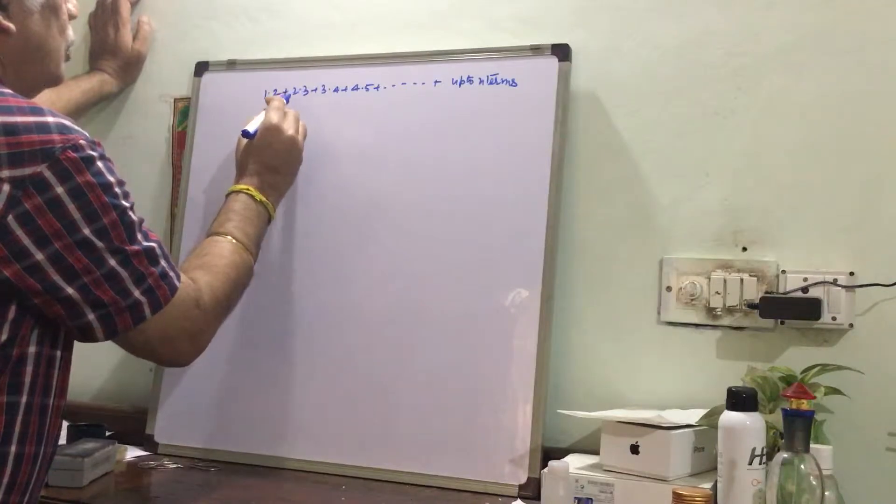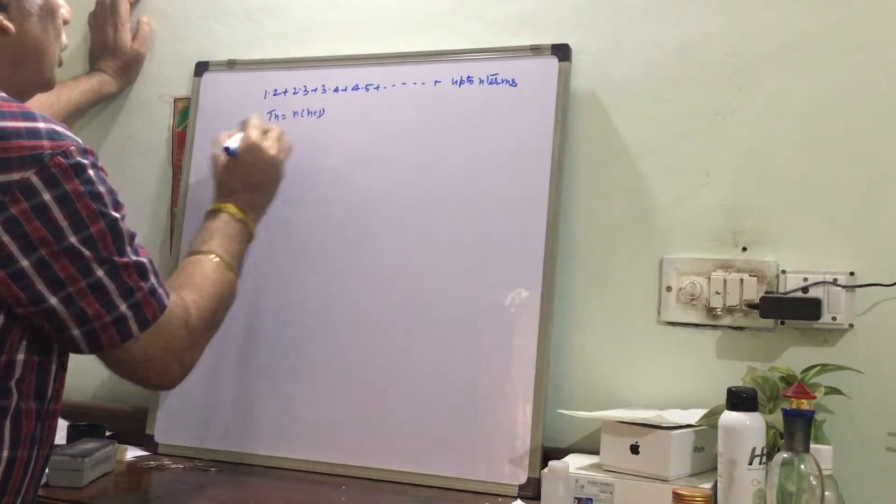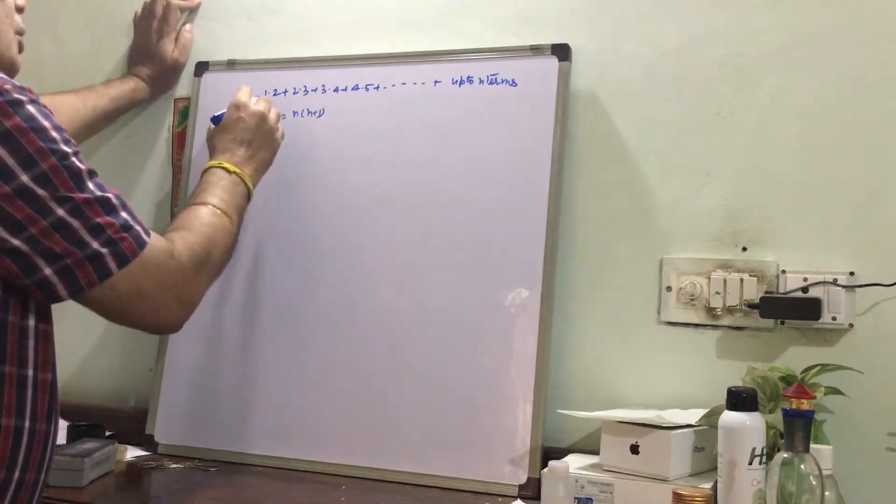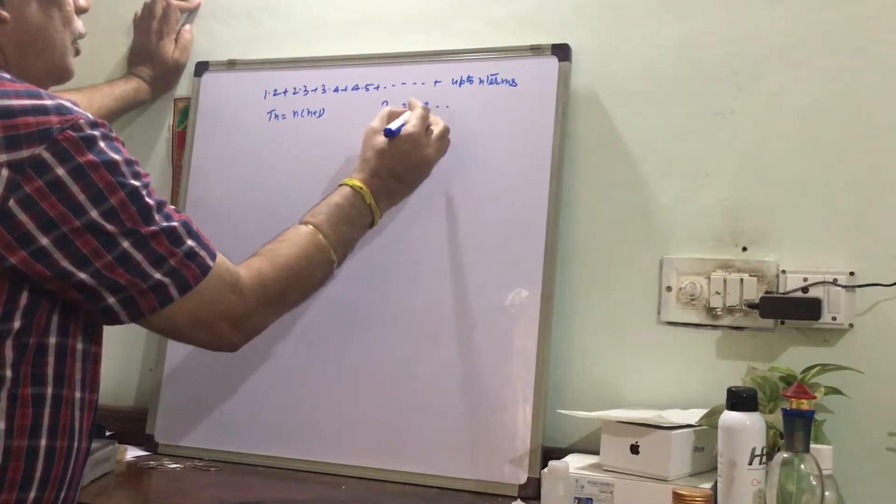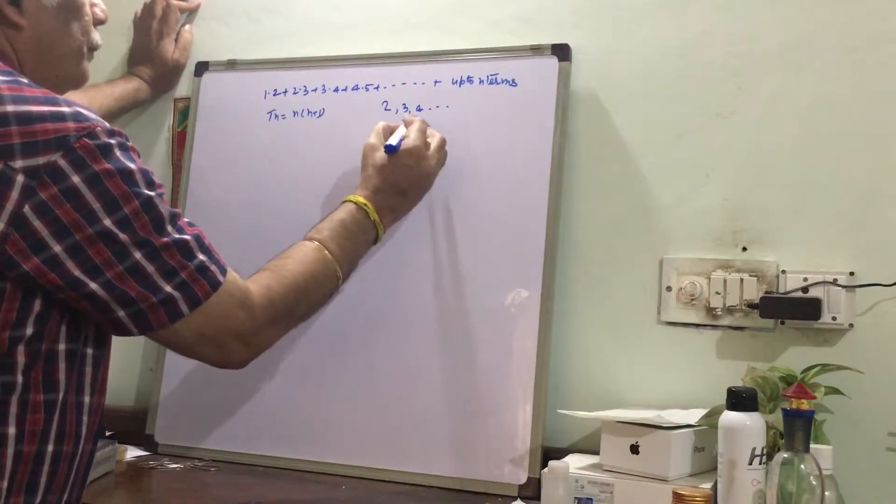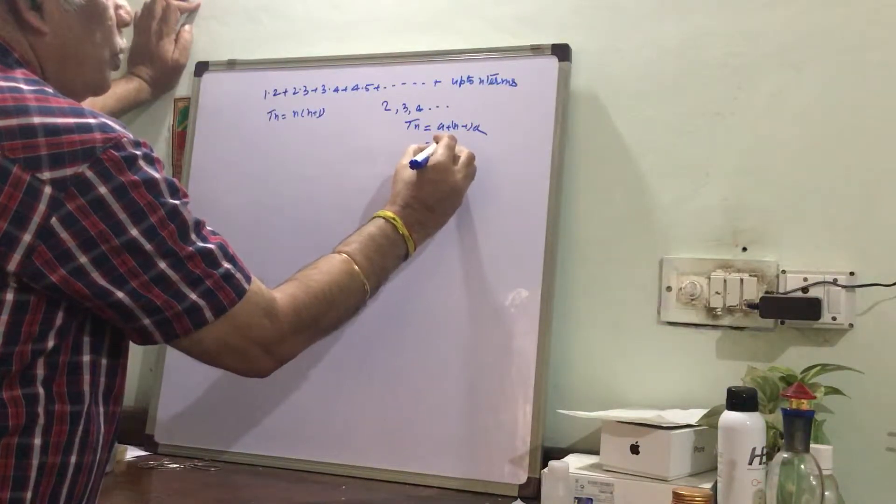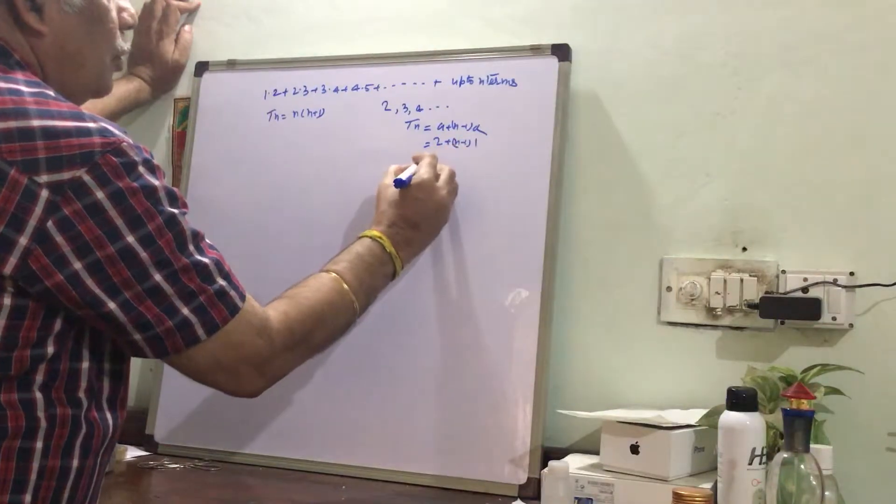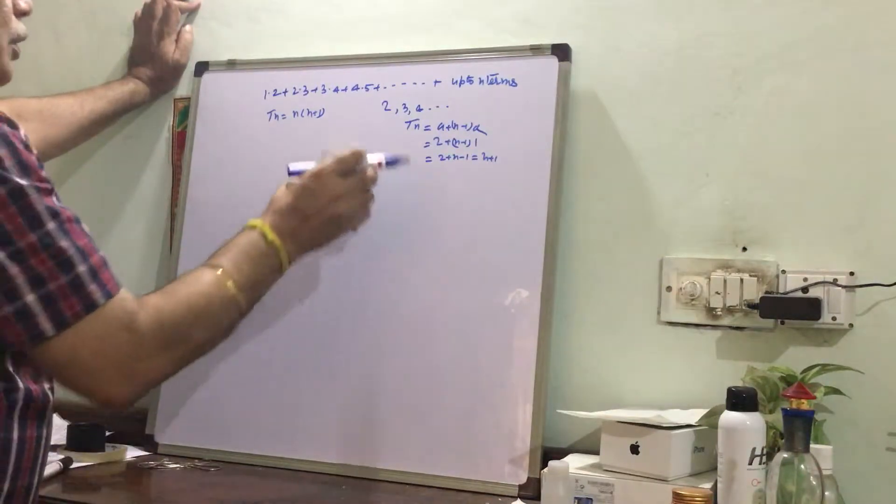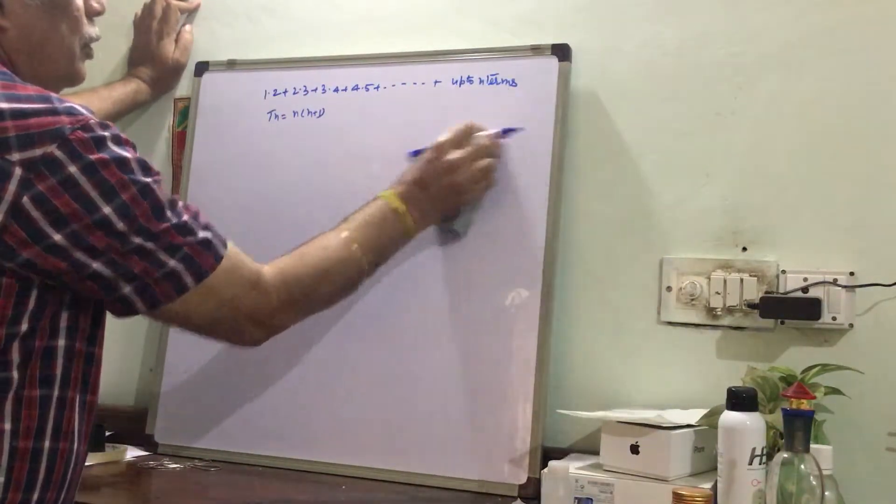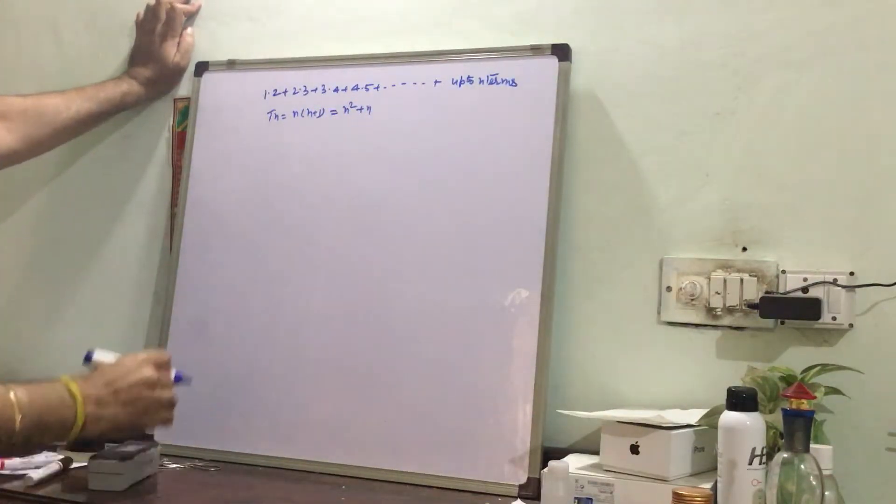So we can write Tn is equal to n and n+1. The second term, the second component of this term, is forming 2, 3, 4, so this is basically a plus n-1 into b. So a is 2 plus n-1 into d is 1. This is 2 plus n-1 equal to n+1, so we can write it in this way.